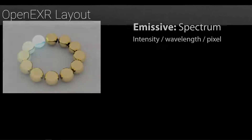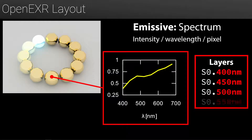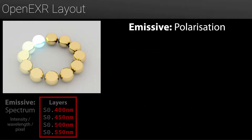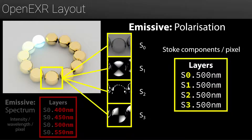Let me show you how we pack those two types of spectral information in an OpenEXR image. We extensively use the layering system of OpenEXR to store multiple frame buffers in the same file. For emissive images, we have an S0 layer hierarchy having a child layer for each of the wavelengths to represent the emissive spectrum. An emissive image can also be polarized — then we add S1, S2, and S3 layer hierarchies to store the individual components of a Stokes vector per pixel per wavelength.